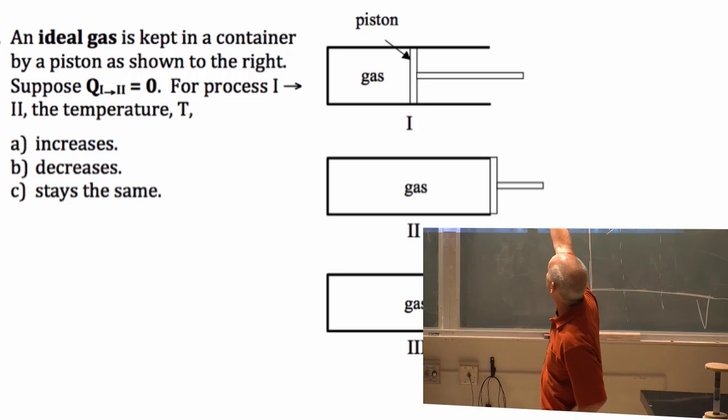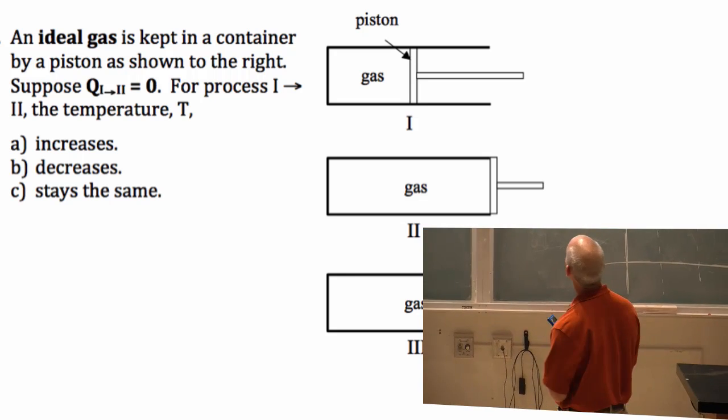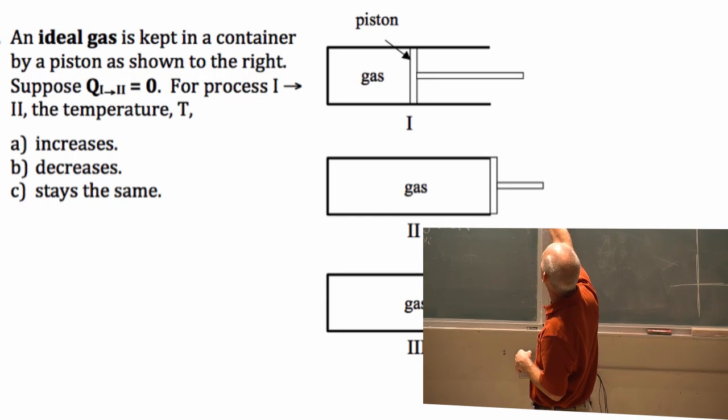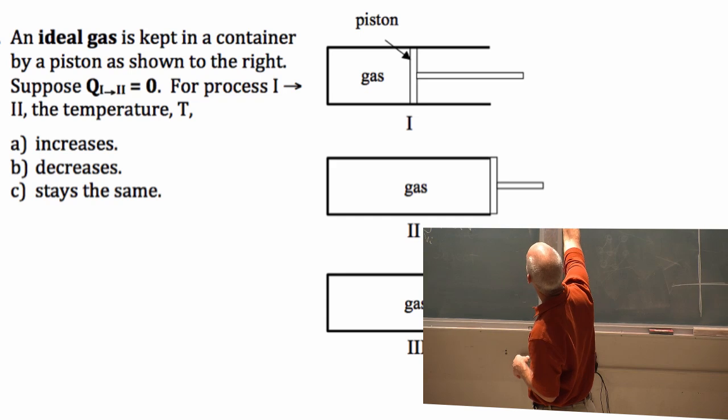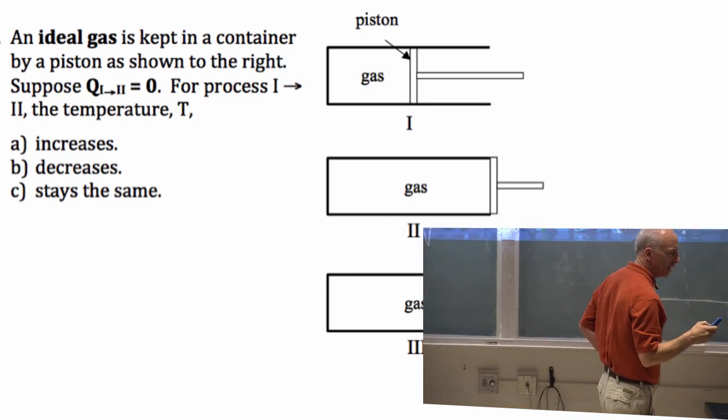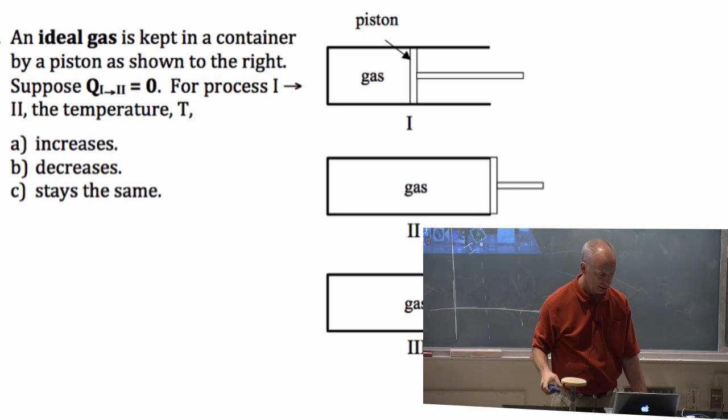Any other questions on that? So, same thing. Step 1 to 2. First question, we decided that W is negative. Now, I'm going to tell you that Q from 1 to 2 is 0. For process 1 to 2, temperature of the gas increases, decreases, or stays the same.